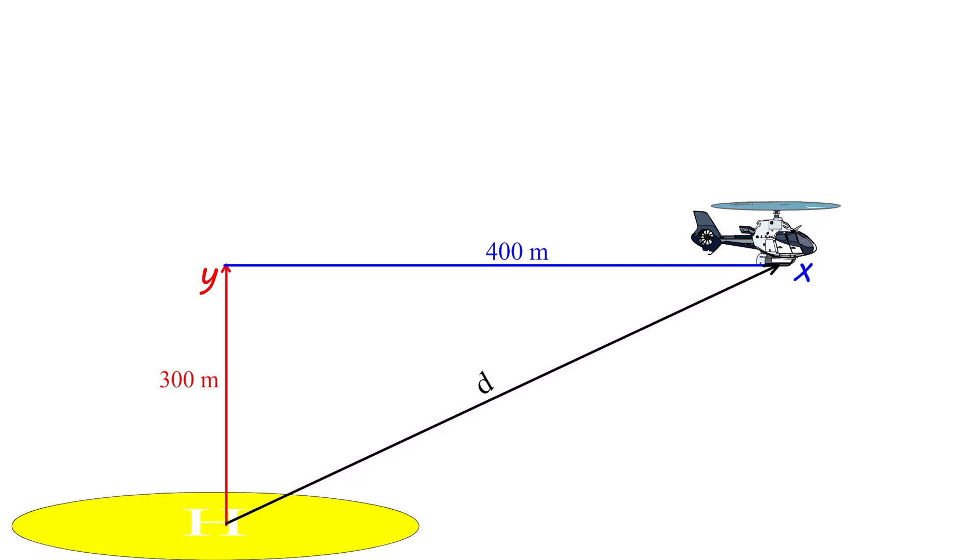In order to completely describe the helicopter motion, we must know the helicopter change in position which includes the helicopter displacement and direction. As the path followed by the helicopter with its displacement form a right triangle, we can use the Pythagorean theorem to find the displacement. d square equals y square plus x square. So d square equals 300 square plus 400 square.